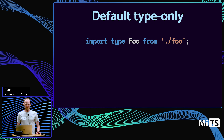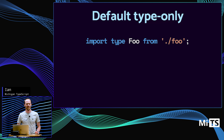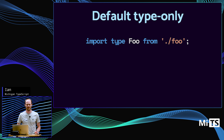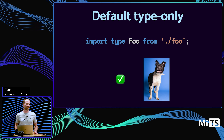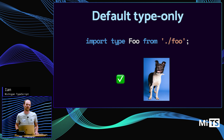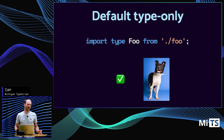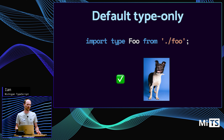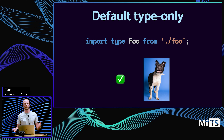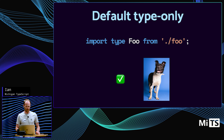How about a default type-only import? Yes, you can. This is handy for classes, since classes have both a value and a type. So you might export a default class but only want to use its type in the file you're importing it into.